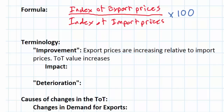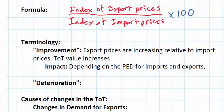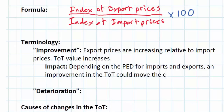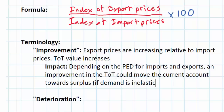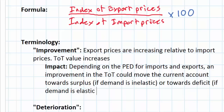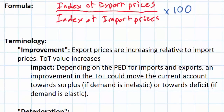We must consider the price elasticity of demand for imports and exports. Depending on the PED for imports and exports, an improvement in the terms of trade could move the current account towards surplus — and this would occur if demand is inelastic for exports and imports — or towards deficit if demand is elastic for imports and exports.